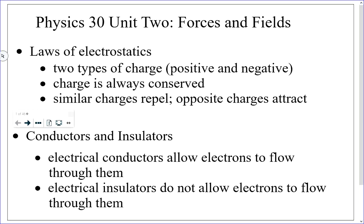Obviously, opposite charges will attract and similar charges repel. The bigger picture here is that you understand that if something is positively charged, it's positively charged because it's missing electrons. I'm talking about macroscopic objects — something you can hold in your hands. So if you have an object that's positively charged, somehow electrons have been removed from it. If you have an object that's negatively charged, then clearly electrons have been added to it.